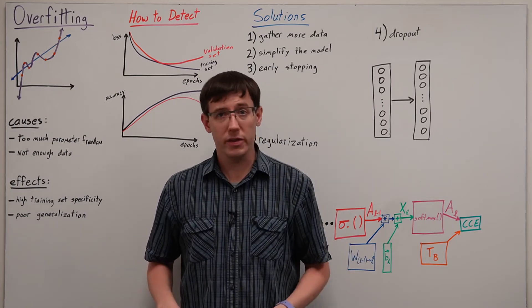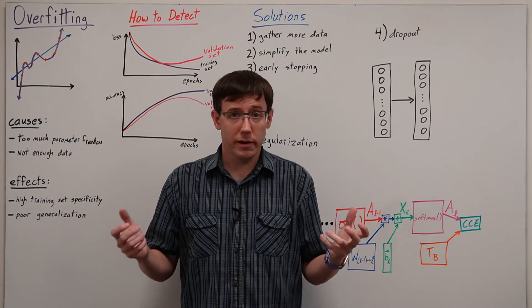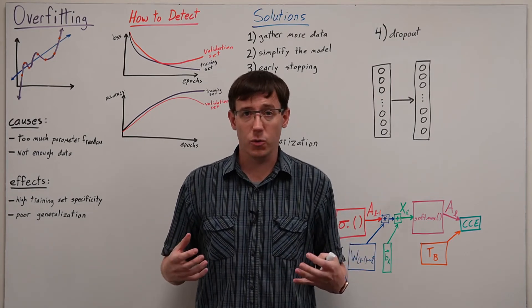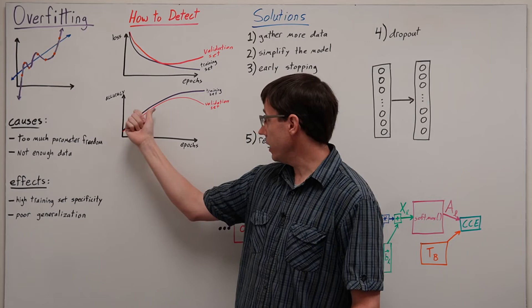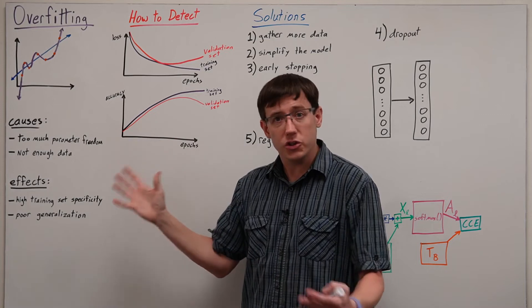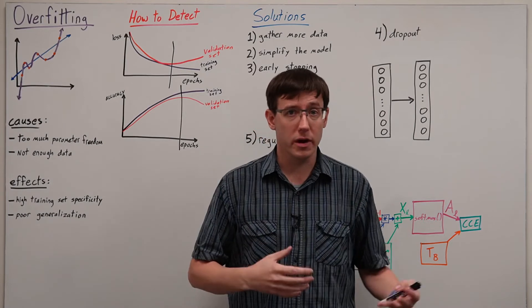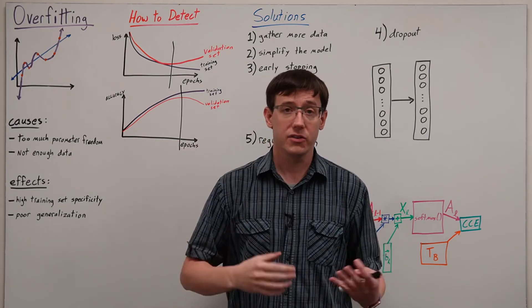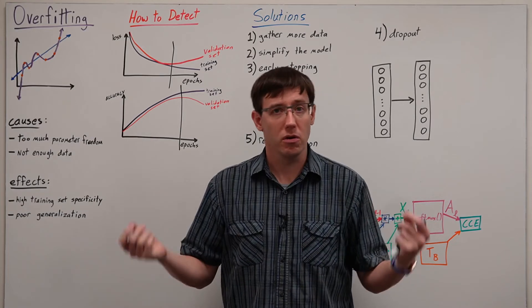But supposing we've picked what we think is a reasonable size of model and a reasonable amount of data, and we're still worried about overfitting, what else can we do? Well, the first idea should be an obvious one based on how we could detect overfitting, which is that if we notice a separation between the training and validation sets, at that point we should just stop training. And this is a thing that we can write code to do automatically. We can detect if the loss or the accuracy on the validation set has stopped improving, and cut off training even if we haven't reached the maximum number of epochs.